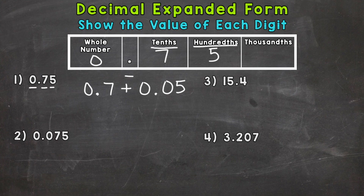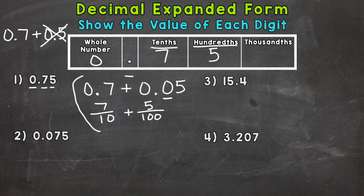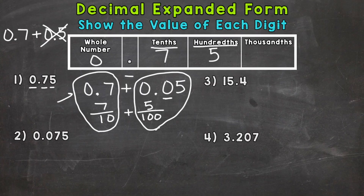A common mistake would be to write seven tenths plus five tenths. But that five is in the hundredths place — you can't have two digits sitting in the same place. We need this placeholder zero to push that five over to the hundredths. As far as fractions go, we would write seven tenths plus five hundredths. One is in decimal form and one is in fractional form, and these are equivalent.